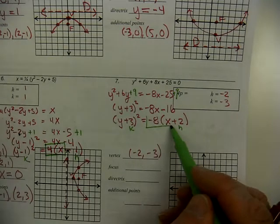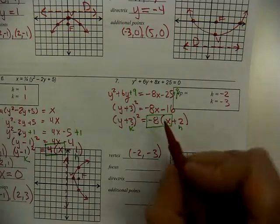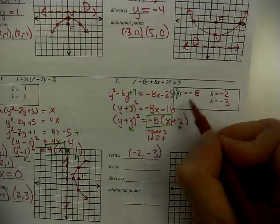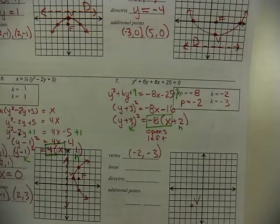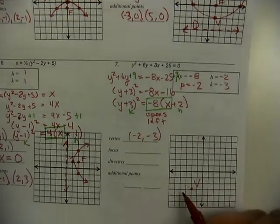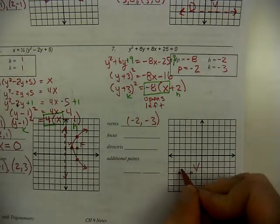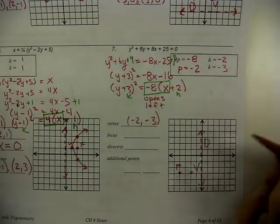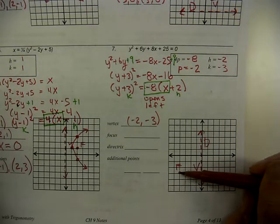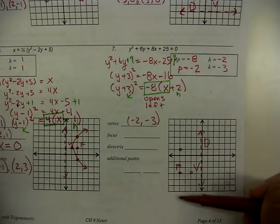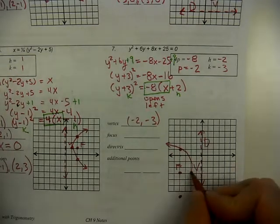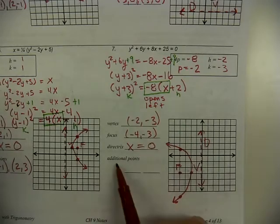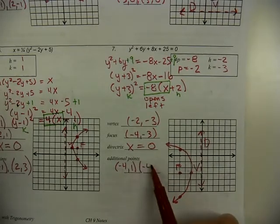The negative eight is paired with x, and negative x is plotted on the left-hand side, so this opens left. Set −8 = 4P: P is −2. Because it opens left, the focus is 2 units to the left of the vertex. The directrix is 2 units to the right. The directrix is on the y-axis, so x = 0. Double P to get 4, and count 4 units above and below the focus for the additional points. The focus is at (−4, −3), the directrix is x = 0, and those additional points complete the graph.